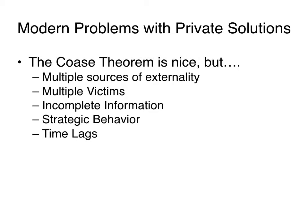There could also be multiple victims — you don't necessarily know everybody who's being impacted by the external action. Pollution would be a great example of this. Incomplete information is another issue: you don't know exactly what is happening, like an impact from cancer or from smoking. You don't know either what it is or how it's affecting you. There could also be strategic behavior — aggressive attempts to gain larger portions of the benefit from negotiations.